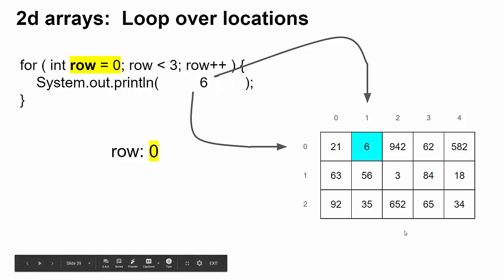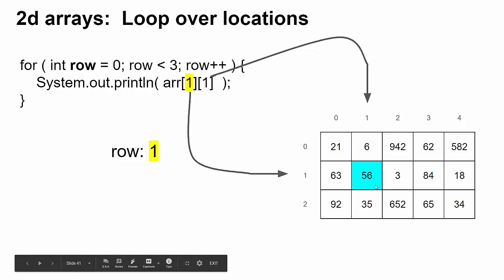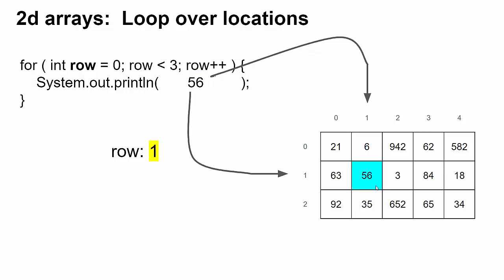The first thing we display is six and then row goes up by one because it's in this for loop. Now it's like we've gone down by one row, but the column number is still one. So we started at six. Now we're down at 56 because we're at row one, column one. So we display 56.